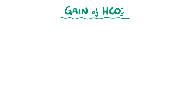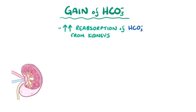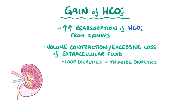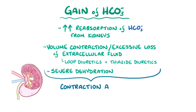The second cause, a primary gain of bicarbonate, is usually caused by an increased reabsorption of bicarbonate from the kidneys. One stimulus is volume contraction, or excessive loss of extracellular fluid, which can happen with loop diuretics and thiazide diuretics, as well as in cases of severe dehydration. The resulting alkalosis is called a contraction alkalosis. Sometimes dehydration happens in combination with other causes of metabolic alkalosis, like prolonged vomiting.